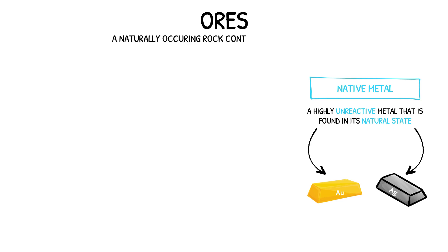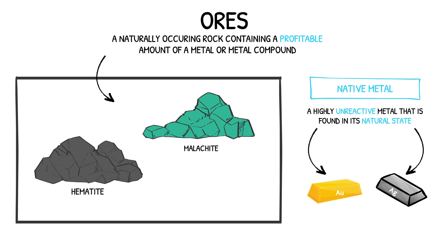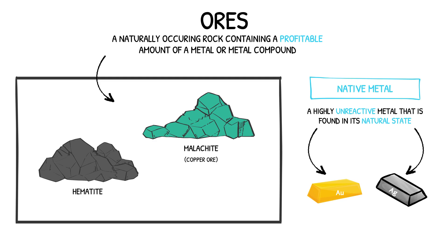Naturally occurring rocks that contain a profitable amount of metals or metal compounds are called ores. Ores must contain enough of the metal or metal compounds to make it worthwhile to extract them. Malachite and hematite are examples of ores that are mined to extract common metals. Malachite is an ore containing copper carbonate and is mined to extract copper metal. Hematite is an ore containing iron oxide and is mined to extract iron metal.